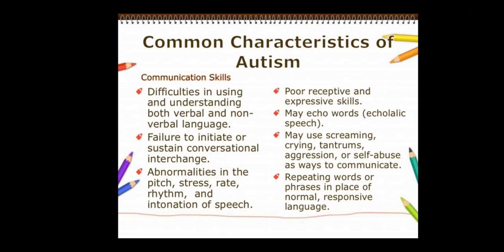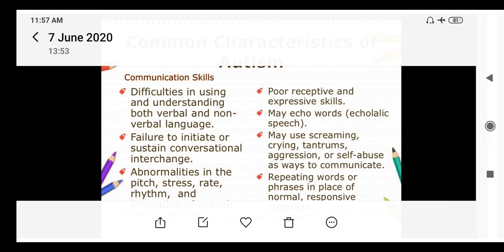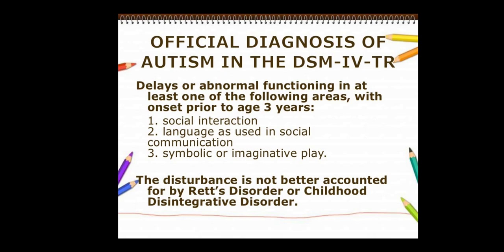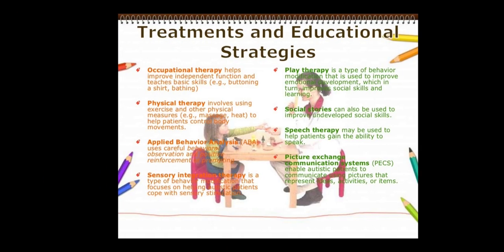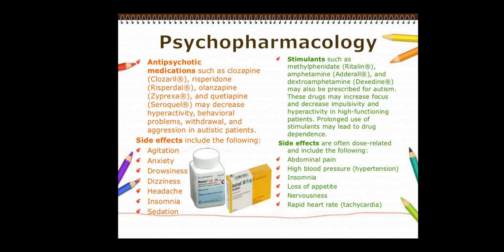In summary, autism — also known as autistic spectrum disorder — presents with abnormalities in three main areas: communication, social skill, and behavioral skill. It occurs mainly in males compared to females and is present from about 18 months to 3 years. We have covered characteristics, diagnosis criteria, treatments and therapies, nursing care, dietary modification, and psychopharmacology — with antipsychotics and stimulants as the two drug categories.